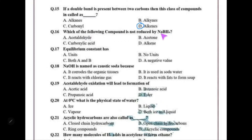Which of the following compounds is not reduced by NaBH₄? Sodium borohydride is a weak reducing agent compared to lithium borohydride. It cannot reduce carboxylic acids — it cannot convert carboxylic acids to alcohols.